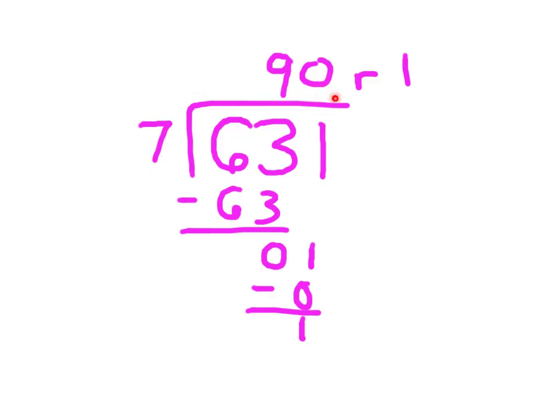0 times 7, which is 0. And then I subtract it. Digit there. Digit there. Remainder 1. My check should work. And it will. Add in our remainder. 631.